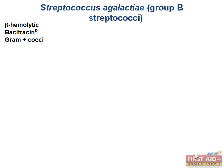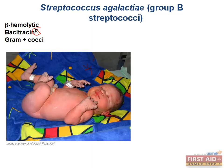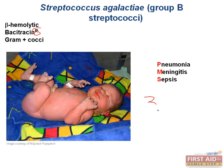Strep agalactiae, or group B strep, are beta-hemolytic gram-positive cocci distinguished from group A strep by being bacitracin-resistant and positive on the hippurate test. Think of the B as standing for babies — group B strep most commonly causes pneumonia, meningitis, and sepsis in infants, usually acquired via passage through a colonized vaginal canal. Since group B strep is normal flora in approximately a quarter of all women, it is standard practice in the US to screen all pregnant women at 35 to 37 weeks, with positive cultures receiving intrapartum penicillins before delivery.